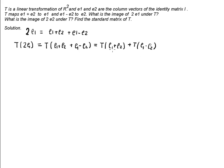Since we know the images of both vectors, we now know the image of 2E1. By the given conditions, this is simply equal to E1 plus E2.